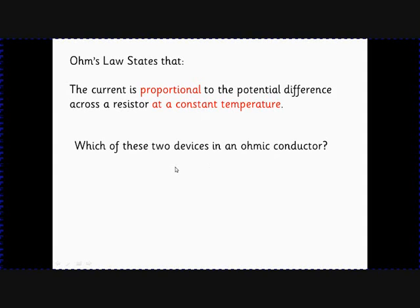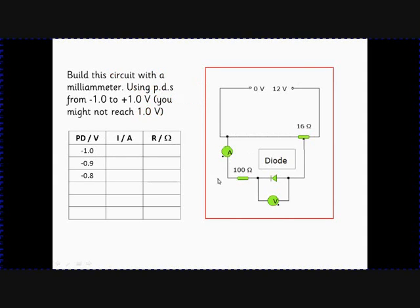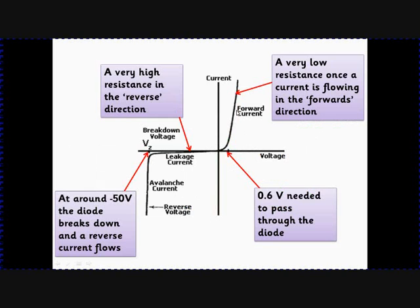Here's our diode circuit. This is the simplified graph. The key points are: if we've got forward current going the same direction as the triangle on the diode, we get a big current quite easily with very low resistance once we've passed this threshold at about 0.6 volts. Not much current for 0.6 volts, but then a very big current quite easily.